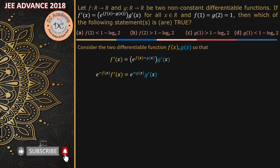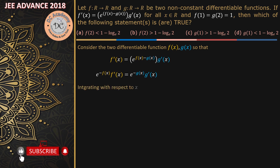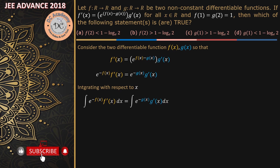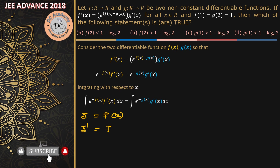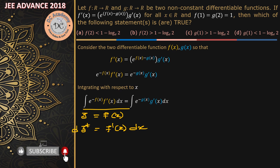The left-hand side and right-hand side are functions of f(x) and g(x) respectively, so we can integrate both sides with respect to x. For the left-hand side, we substitute z = f(x), so dz = f'(x)dx. The integral becomes the integral of e^(-z) dz.